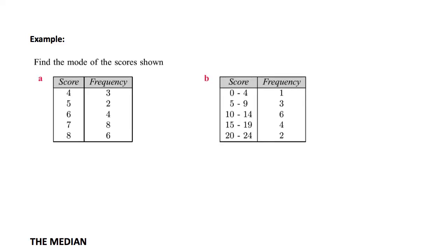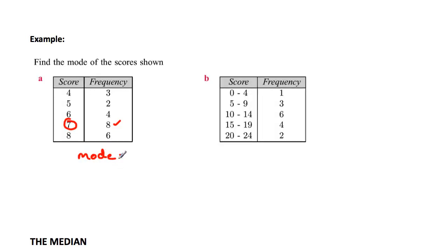Here we've got a frequency table, and in a frequency table we can see the mode very quickly. Here are the possible scores and this is how often they occur. If you look down here, the biggest frequency is 8, which means that 7 is the score that occurs most frequently. So here we could say that the mode is equal to 7.